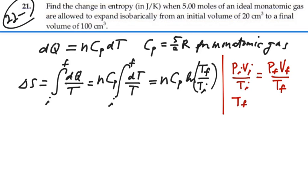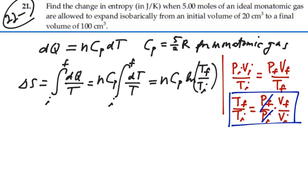However, P final over P initial are the same because of constant pressure. So T final over T initial is going to equal V final over V initial.